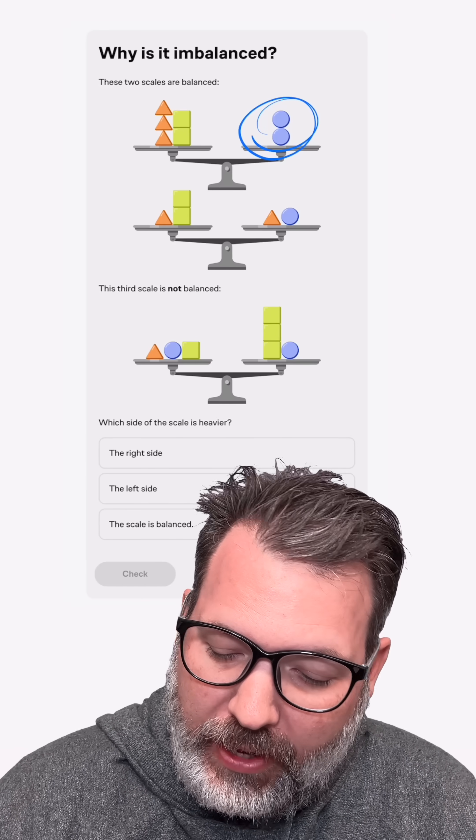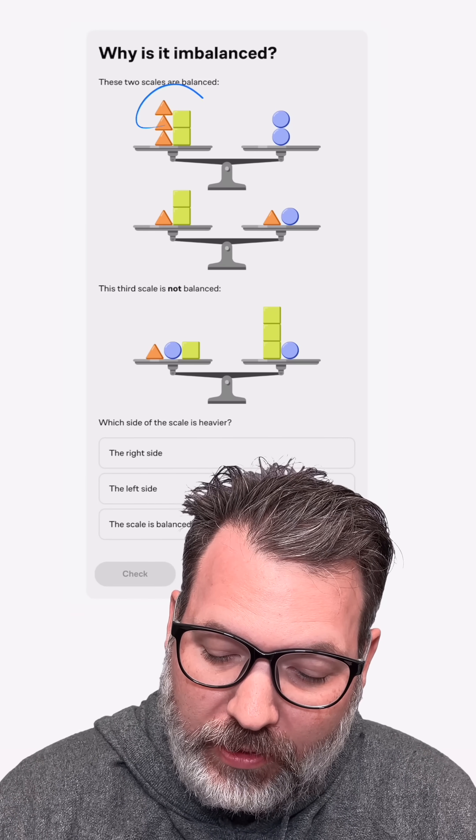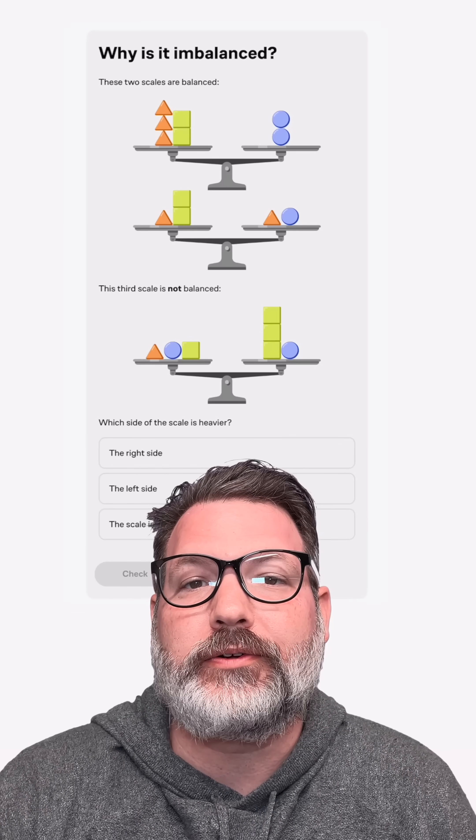I can see right off the bat, right side of the scale here, two circles balance out, match up with left side of the scale, three triangles and two squares.